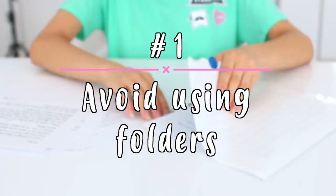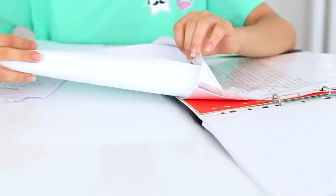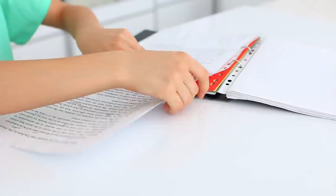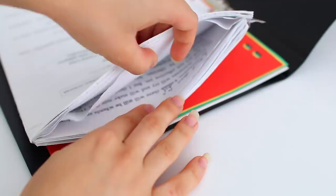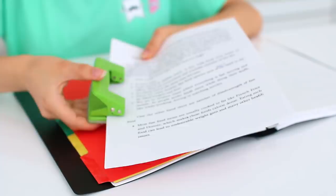The first tip that I have is to avoid using folders. By this I mean folders that have multiple compartments or sheet protectors that you put inside your binder. The reason is because folders encourage you to shove all your papers inside one place without organizing them, and when exam season comes it's really hard to find the paper that you need. When you somehow magically locate the paper and try to take it out, other pages come out with it and it's just overall a huge mess.